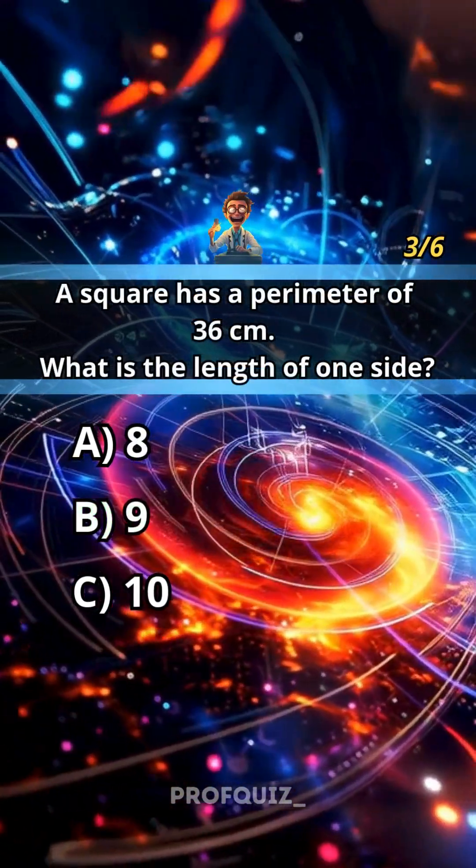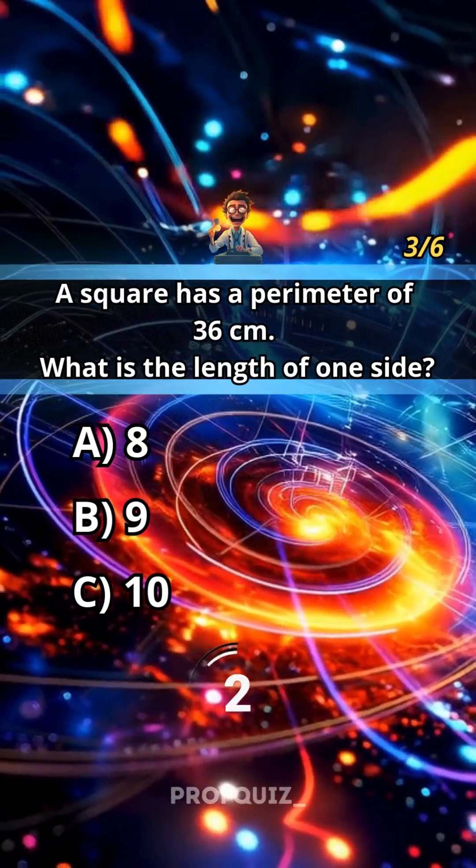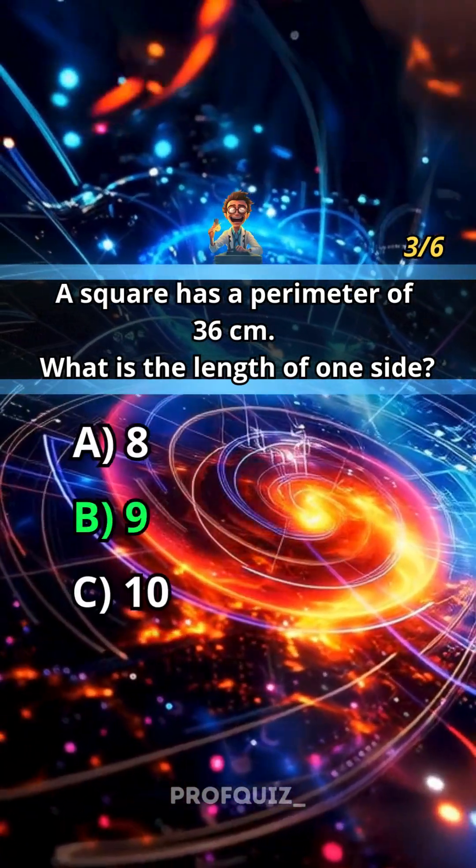A square has a perimeter of 36 centimeters. What is the length of one side? Answer: B, 9.